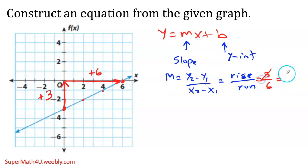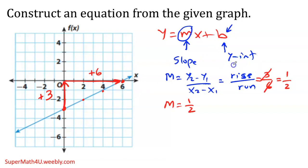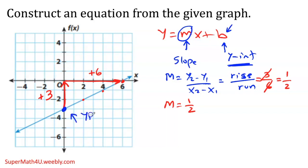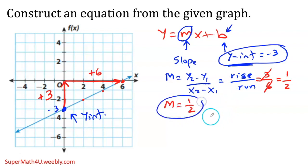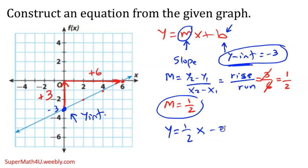My slope is rise over run: positive three over six. Simplifying — three divided by three is one, six divided by three is two — so my slope equals one half. Now for the y-intercept: it's where the line touches the y-axis. From the graph, the y-intercept is negative three. So my equation is y equals one-half x minus three.